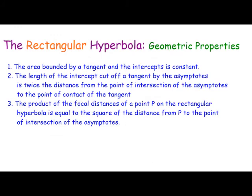Finally, a couple of properties: the triangle bounded by the tangent and the coordinate intercepts for xy equals c squared has a constant area. The length of the chord between the asymptotes is twice the distance from that point to the origin. And the product of the focal distances from point P to both foci equals the square of the distance from P to the origin (or to the intersection of the asymptotes).